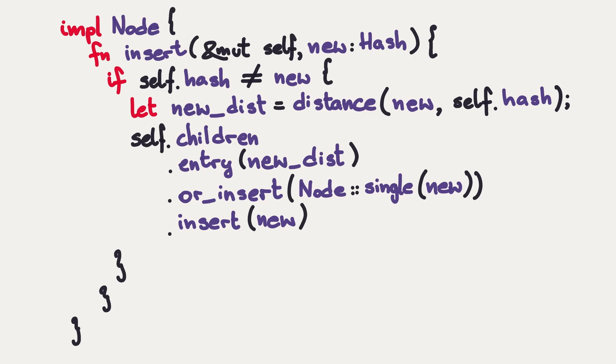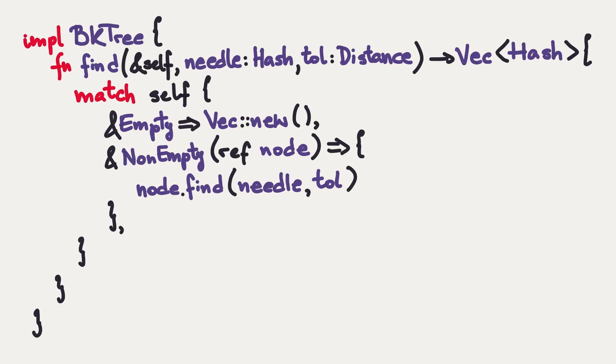Now let's try to find something inside. Given a reference to a BK tree, I want to find all the hashes inside which are at most tolerance-distant from the needle. And get the vector of hashes, for the sake of simplicity. If I'm empty, I return an empty vector. If I'm not empty, I call find on the node, passing the tolerance.